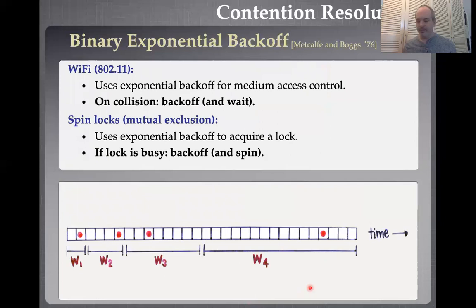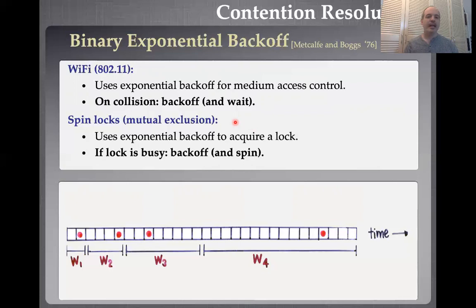Binary exponential backoff is essentially the de facto solution today. It's what 802.11 uses for medium access control — on a collision you back off and wait. There's a lot more that goes on in 802.11 obviously, but this is a key part. It's also what a lot of locking protocols use, like spin locks in parallel computing. They use exponential backoff to acquire the lock — if the lock is busy, you back off and spin and try again. These are just two of the most familiar applications of binary exponential backoff.